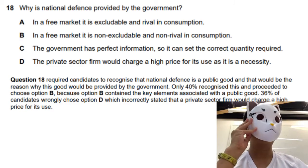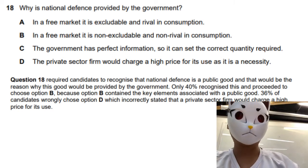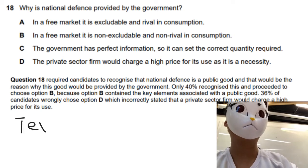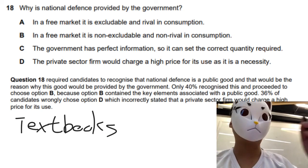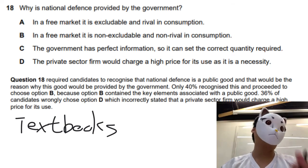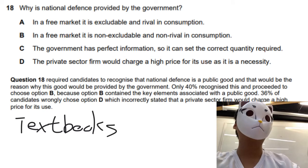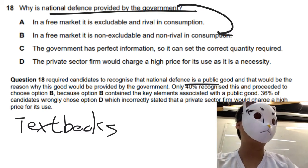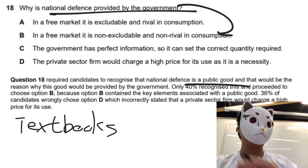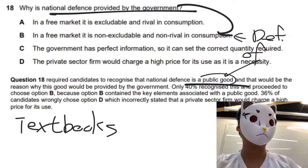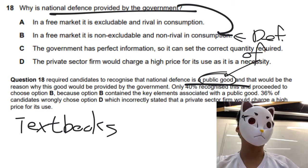Question 18 is very straightforward. It is about national defense, which is included in all versions of the textbook and notes in every school. Why would national defense be provided by the government? Because it's a kind of public good. So the definition of a public good — you go to option B — this is the definition of public goods, and that's the answer.